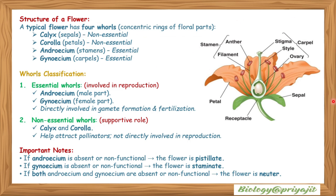Structure of a typical flower: a typical flower has four whorls — concentric rings of floral parts. Number one is calyx or sepals, which are non-essential parts. Second is corolla or petals, also non-essential, which help in attracting pollinators.